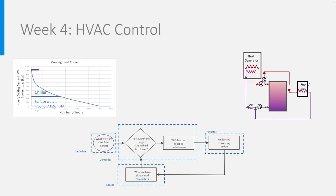This means things like zones, peak shaving, buffers, and combinations of emitters in rooms and combinations of generators. We introduced P&IDs — process and instrumentation diagrams. And finally, you studied briefly how control works with sensors, set values, controllers and actuators.